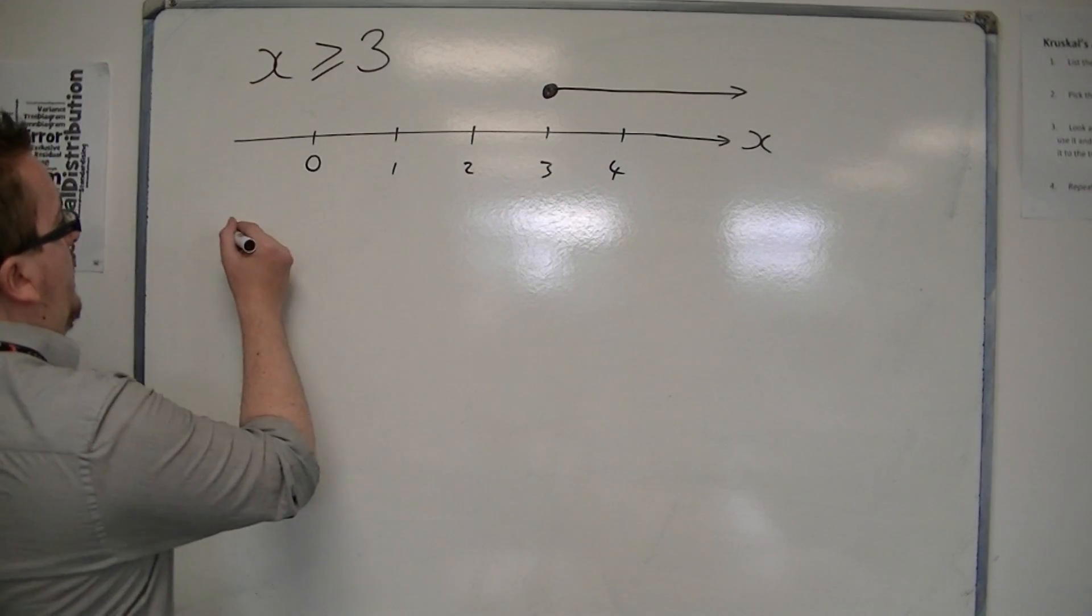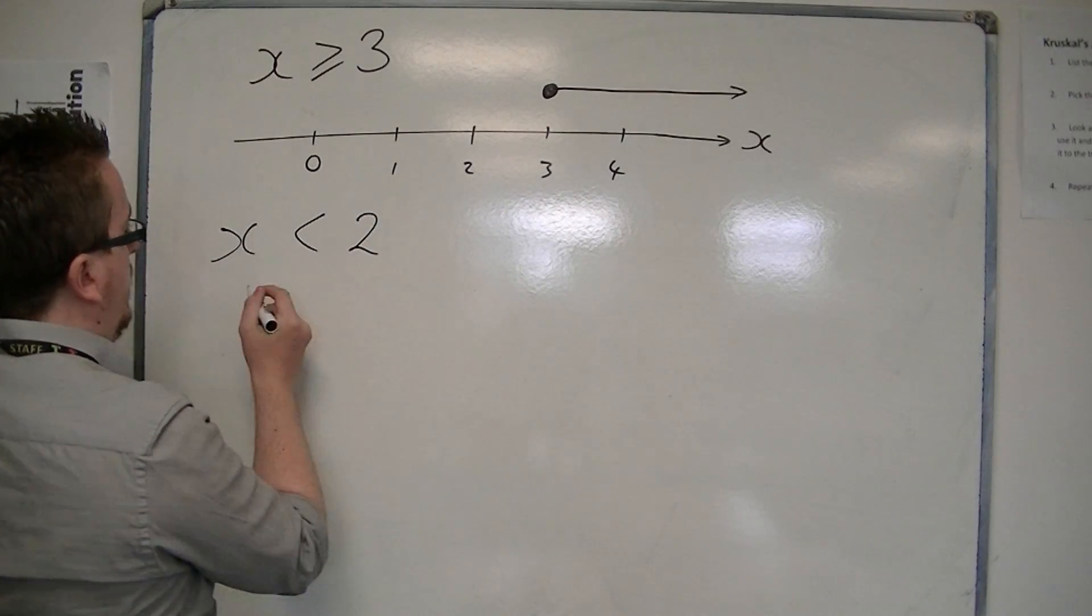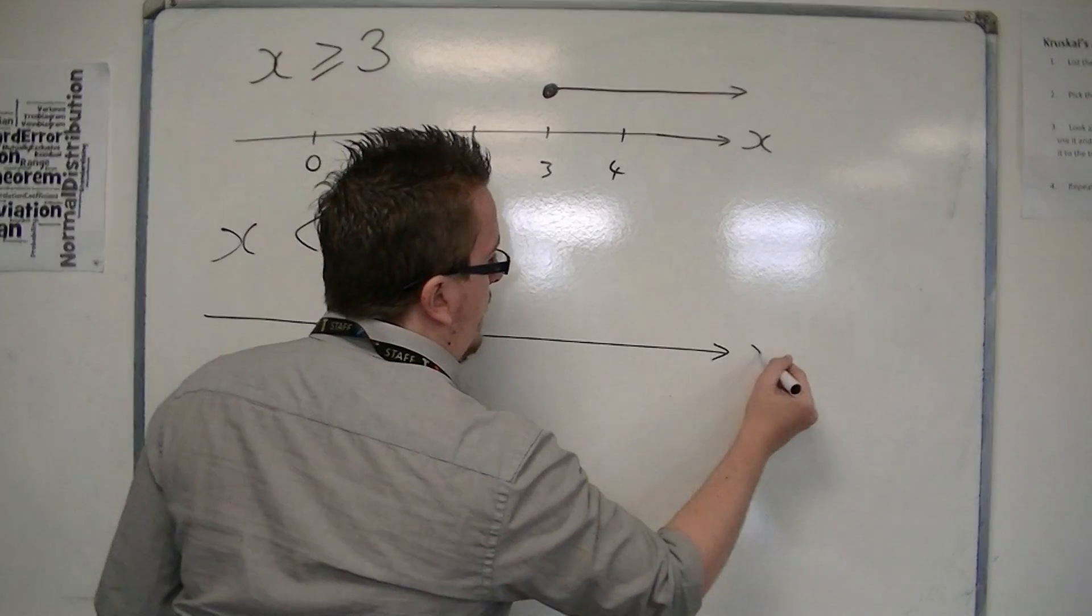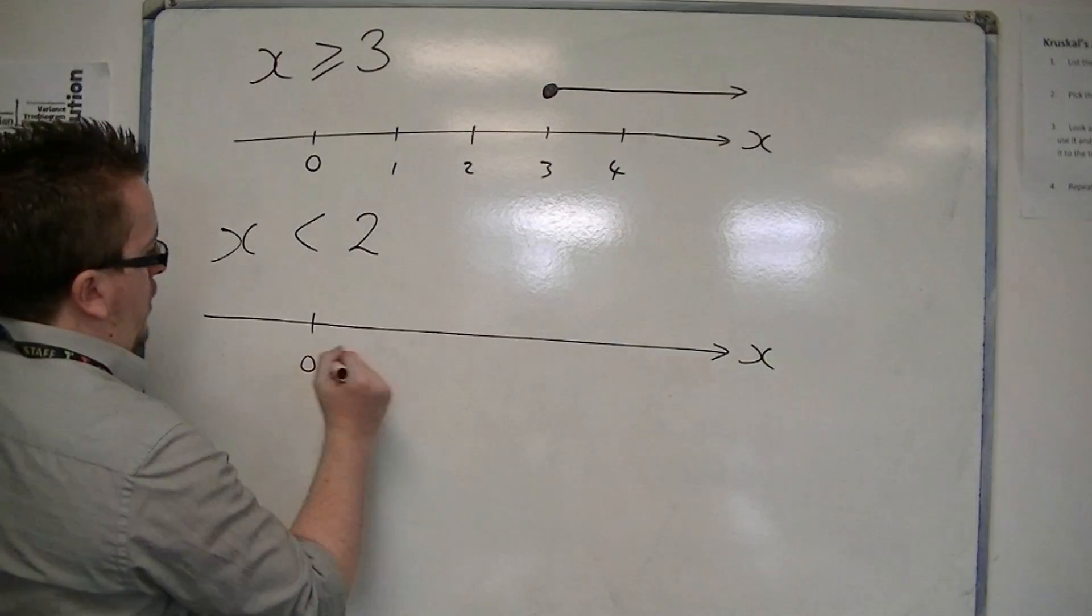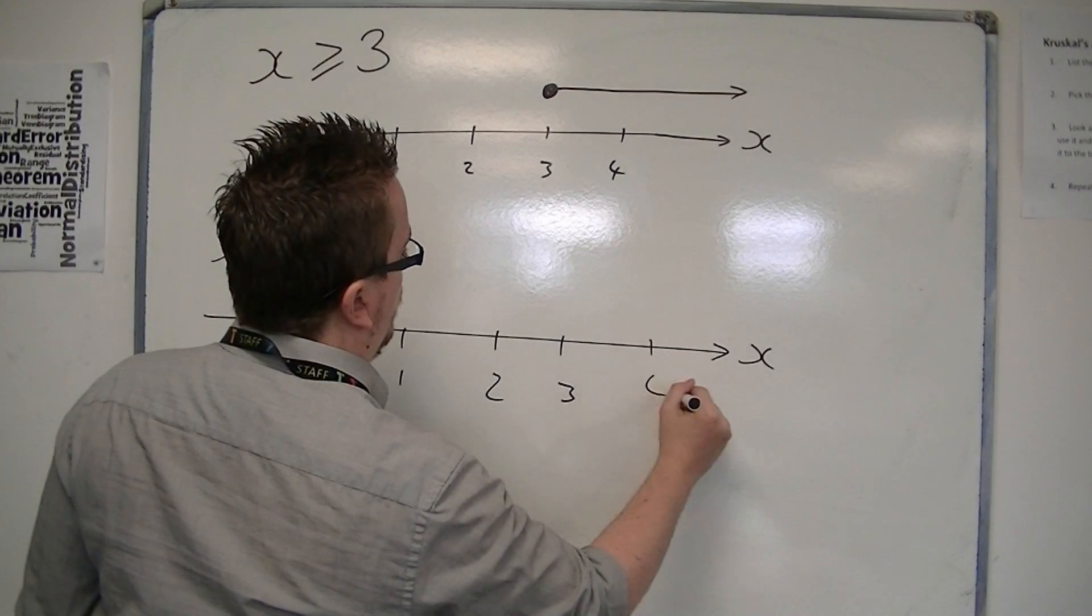And likewise, we could do something like x can be less than 2. So here's my number line again. It's 0, 1, 2, 3, 4.